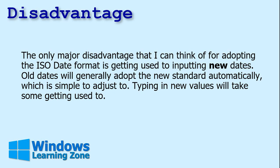Old dates will generally adopt to the new standard automatically. Typing in new values is going to take some getting used to. If you're still typing in common dates like month/day, you can still type in 4/5. But if you're doing stuff with years, you've got to remember to lead with the year — type in 22/4/5 at least. That will work. Practice; get used to it.